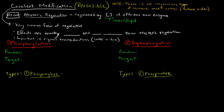Covalent modification is a little bit different. First of all, it's a very common form of regulation. But the effects are usually slower and last longer than allosteric regulation. And covalent modification is actually really important when we think about signal transduction, which we'll talk about in a later video.